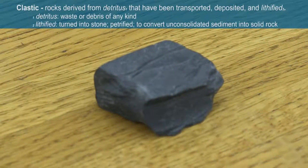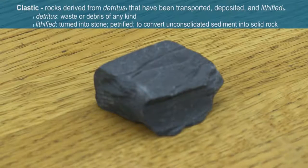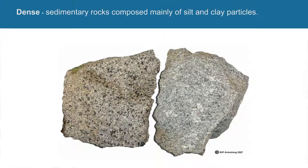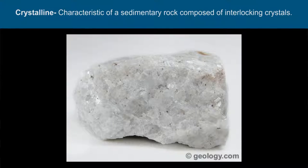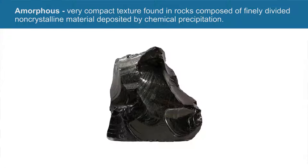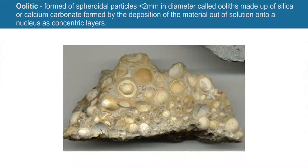Major textures that help identify sedimentary rocks include: clastic — rocks derived from detritus that have been transported, deposited, and lithified; dense — sedimentary rocks composed mainly of silt and clay particles; crystalline — characteristic of a rock composed of interlocking crystals; amorphous — a very compact texture found in rocks composed of finely divided non-crystalline material deposited by chemical precipitation; and oolitic — formed of spheroidal particles less than 2 mm in diameter called ooids, made up of silica or calcium carbonate, formed by deposition of material out of solution onto a nucleus as concentric layers.